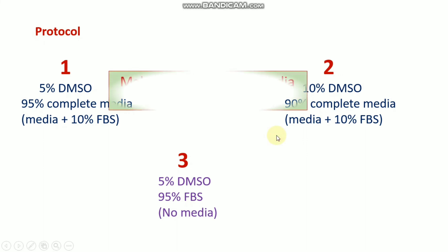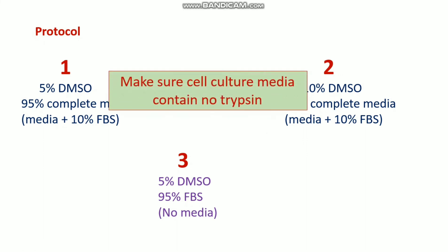You also need to make sure that the cell culture media contains no trypsin. You use trypsin for digestion, and after that you stop the digestion with FBS, but you need to remove the trypsin completely by centrifuge before cryopreservation. Trypsin is very toxic for cells and causes cell death, resulting in a very low cell recovery rate.